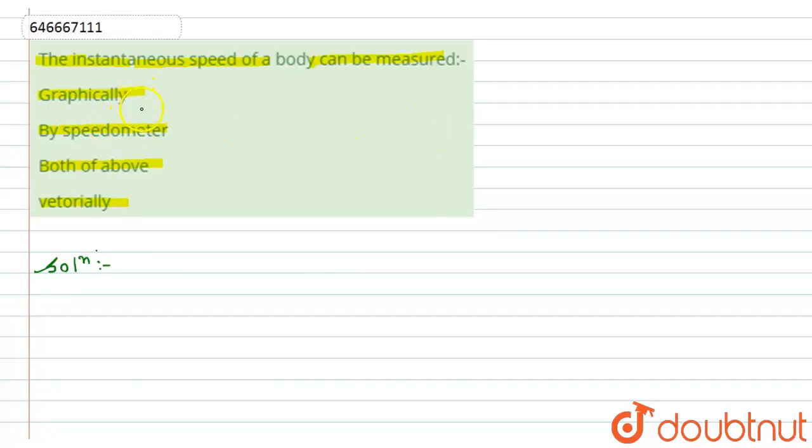what method we can use out of these given options. So basically, we know that instantaneous speed is a scalar quantity and we can only measure the magnitude of the speed because it doesn't have any direction.